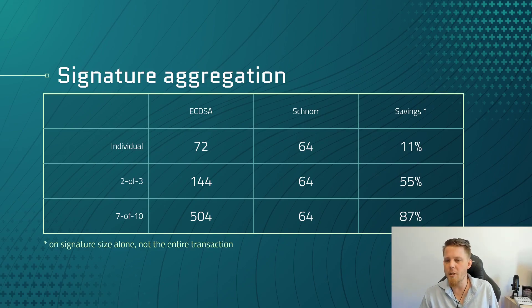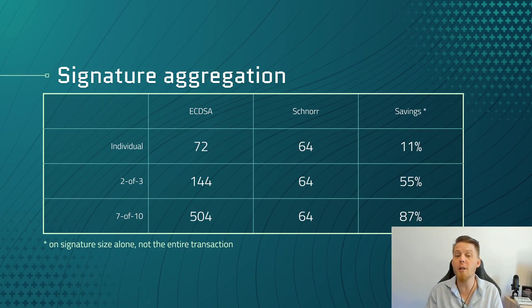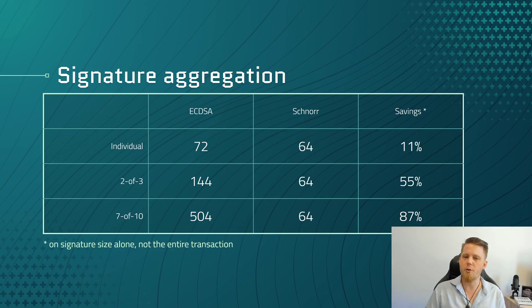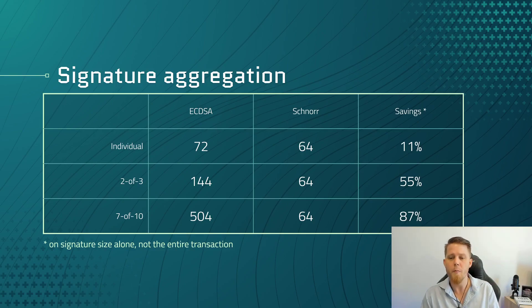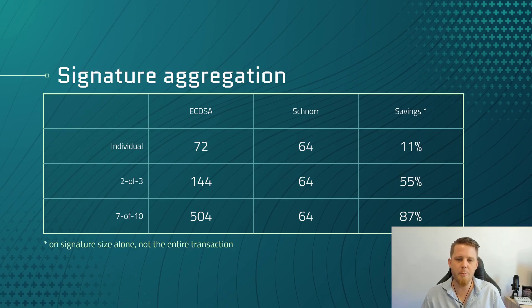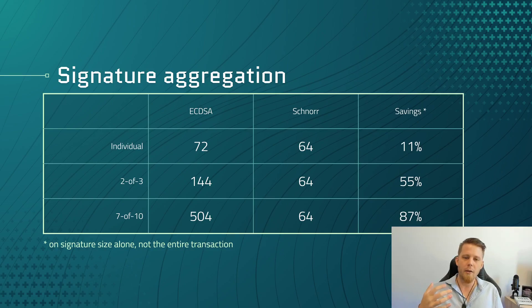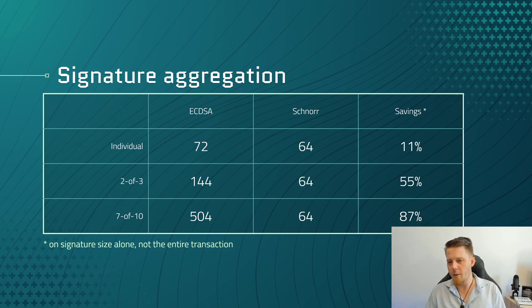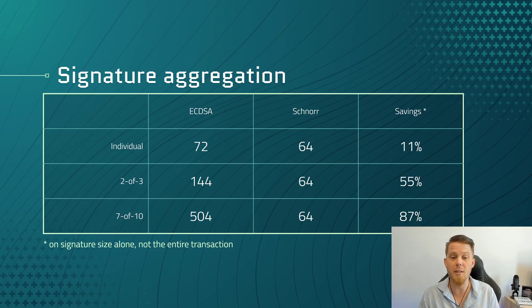What really has a number of people excited is if we were to sign a block — the overall block — should it contain all Schnorr signatures. This would mean you could have just one signature to prove the validity of all of the transactions in a block, rather than each individual input being signed. This plays back into both the privacy and size benefits: no need to know the public key of all those people, multisig just looks like any other transaction, and we're saving decent space too.